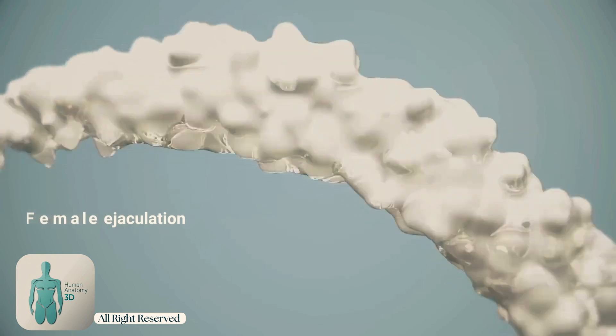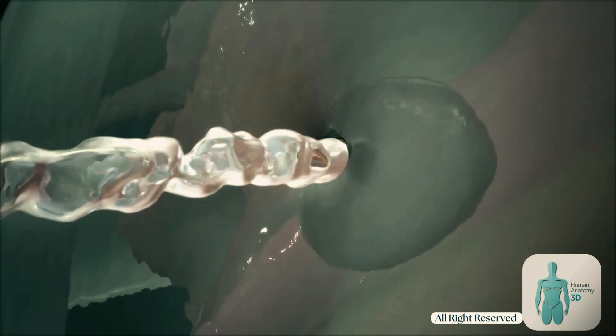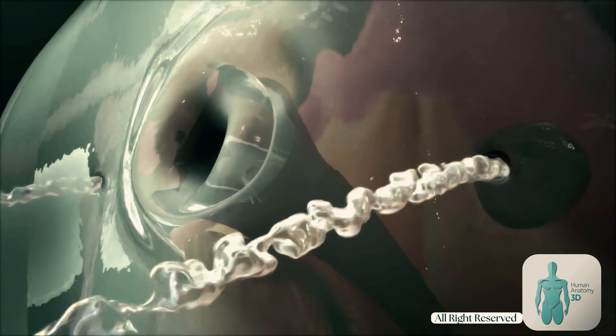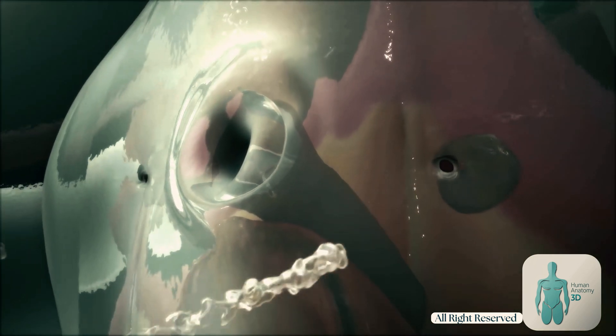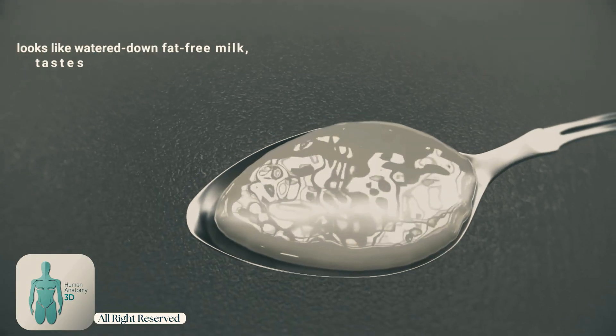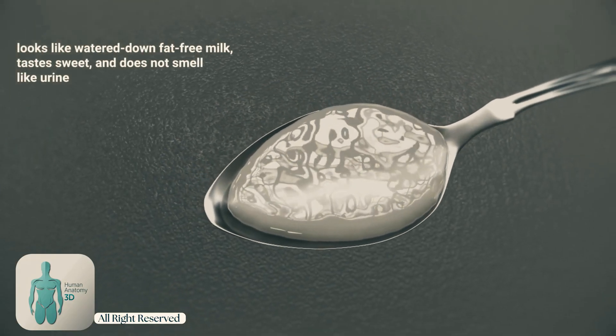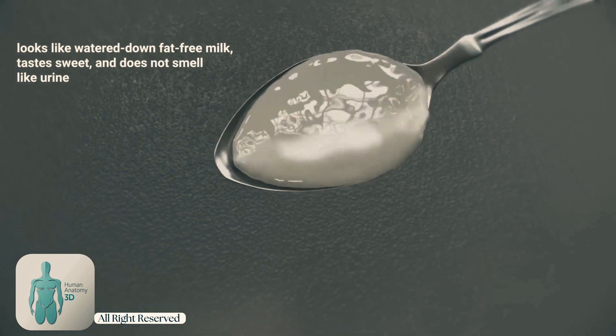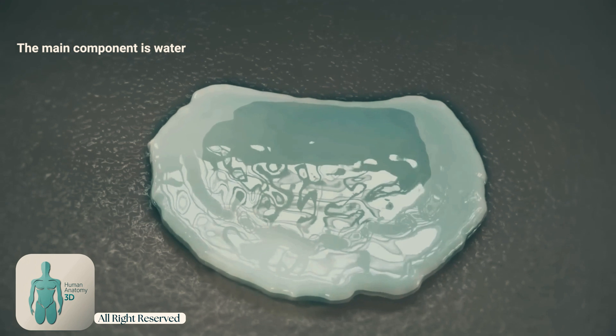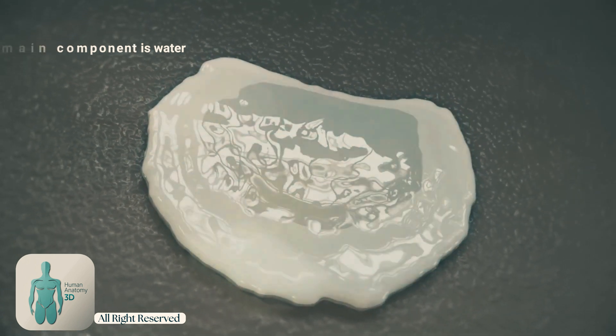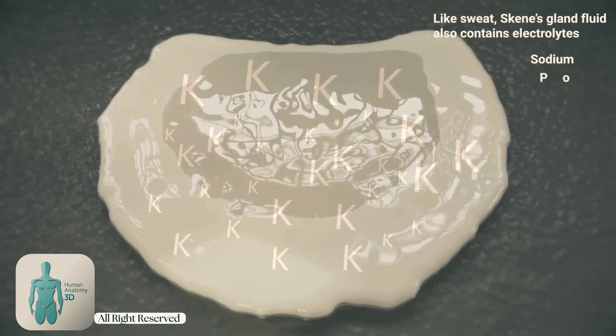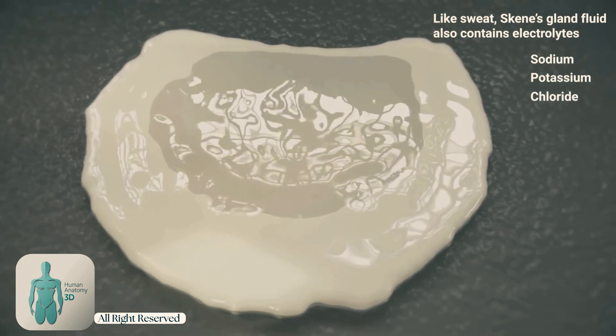The volume of fluid stored in the Skene glands is variable and depends on several factors. Some women experience a forceful expulsion of fluid during orgasm, referred to as female ejaculation. While the source of this fluid is debatable, Skene's glands are considered a potential contributor, potentially adding to the expelled volume. Female ejaculation refers to about a teaspoon, 3 to 5 cc of fluid expelled through the urethra that looks like watered-down fat-free milk, tastes sweet and does not smell like urine.